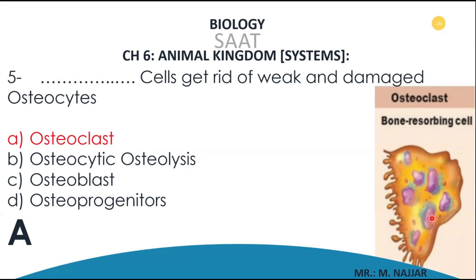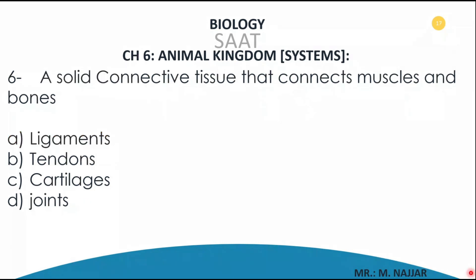The osteoclast are bone-resorbing cells. We have mostly two types of bone cells: osteoclast and osteoblast. Osteoblast are the bone-making cells; osteoclast are the bone-breaking cells. They break down weak bone cells in order to make use of those components to build new, healthy, strong bone cells.